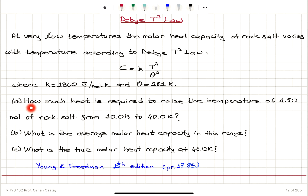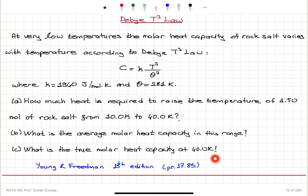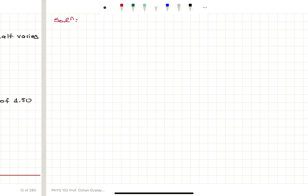Part A: How much heat is required to raise the temperature of 1.5 mol of rock salt from 10 Kelvin to 40 Kelvin? Part B: What is the average molar heat capacity in this range? Part C: What is the true molar heat capacity at 40 Kelvin?